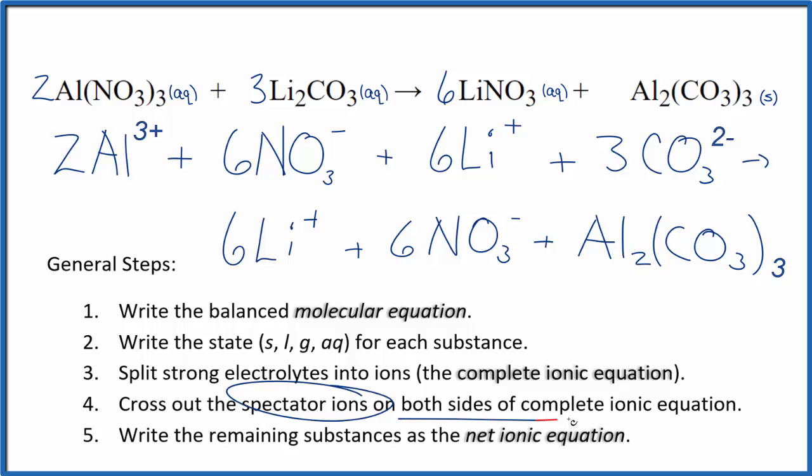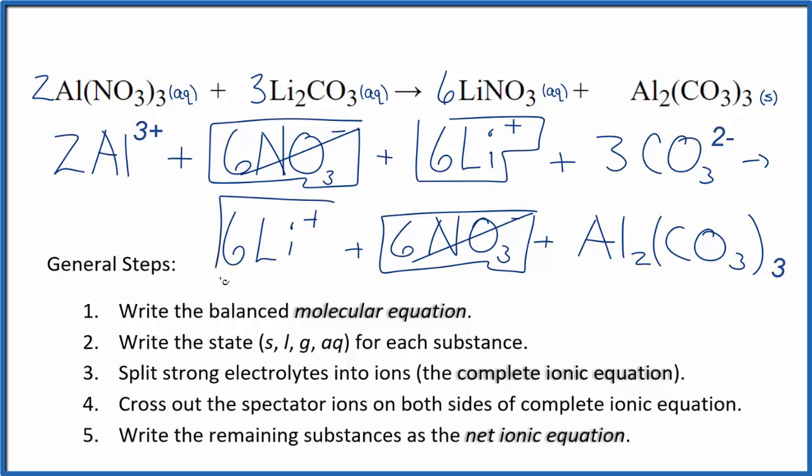Now we cross out spectator ions. They're on both sides of the complete ionic equation. So I see in the reactants here, we have six nitrate ions here and six nitrate ions here. Those are spectator ions. Six lithium ions. Again, six lithium ions. Spectator ions. We cross them out.